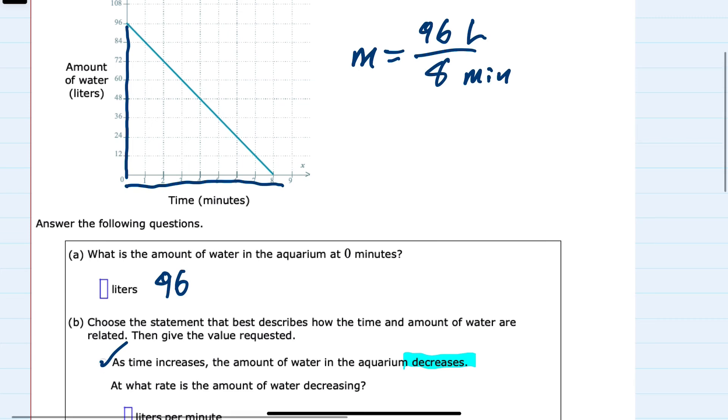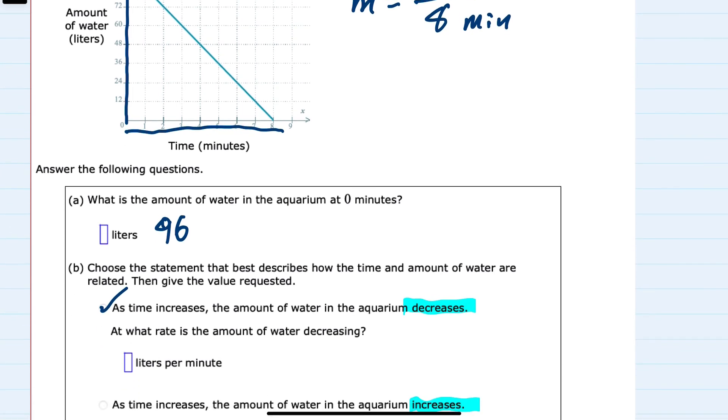So we are decreasing at a rate of 12 liters per minute. And the reason I'm not using negative 12 is because I've already said decreasing.